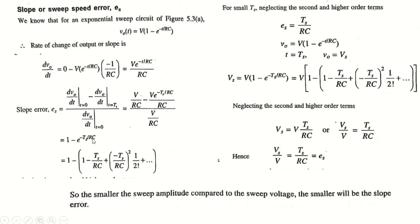Expanding the e^(−x) term as an infinite series: 1 − (1 − TS/RC + (TS/RC)²/2! − ...). Ignoring second-order and higher terms, we get 1 − 1 + TS/RC. The 1s cancel, leaving es = TS/RC.